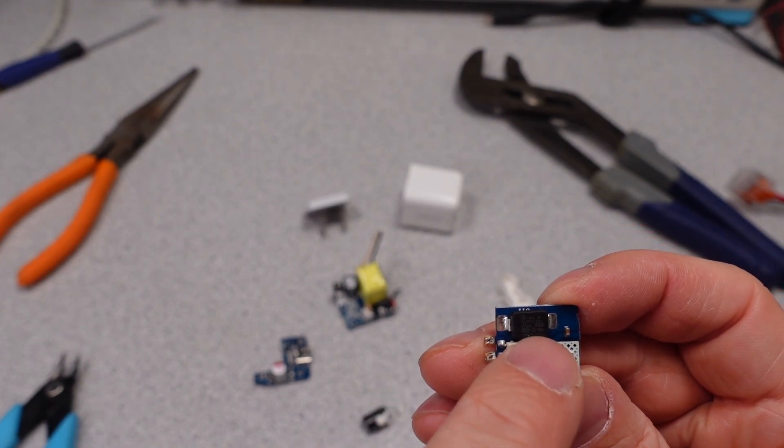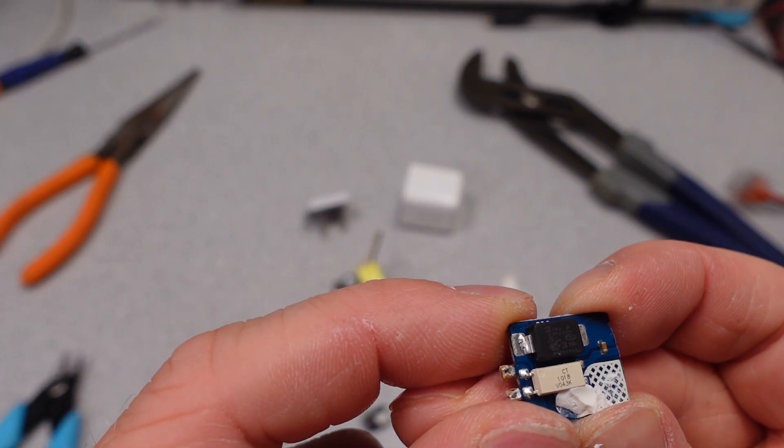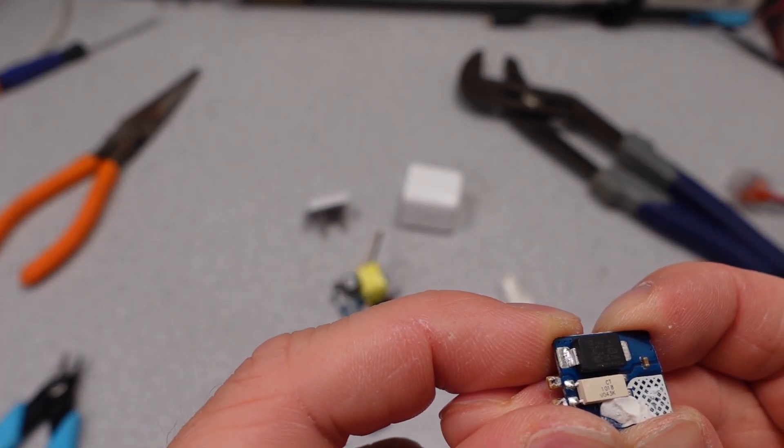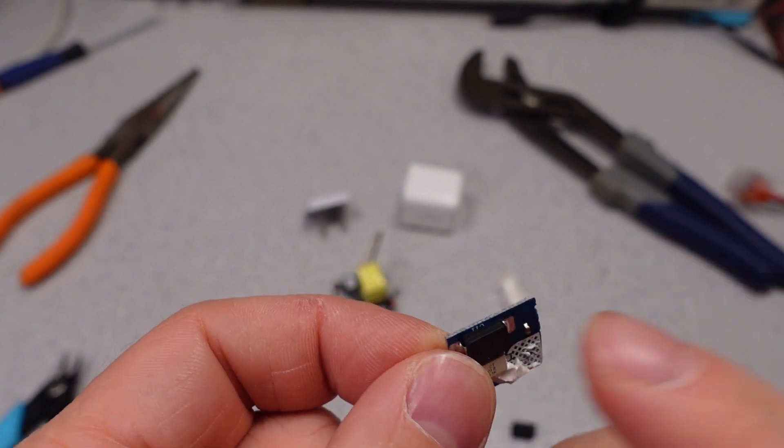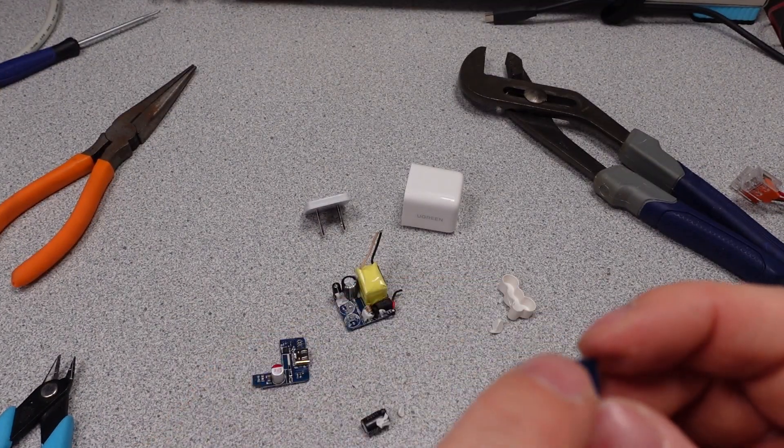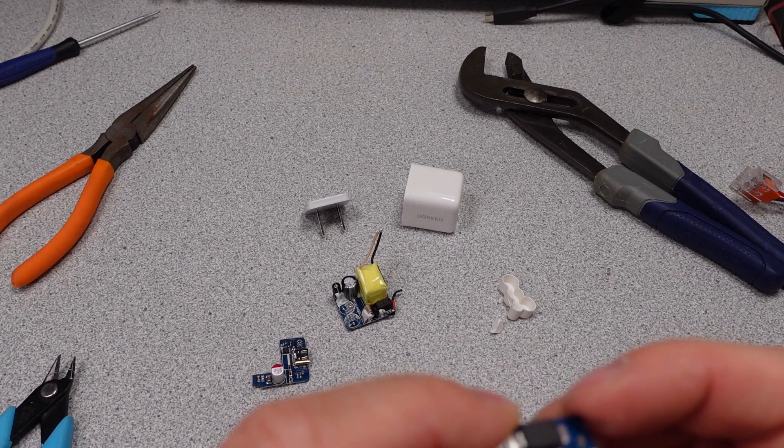And here we have our optocoupler, which we already were looking at. And then on this other side over here, this is actually our suppression capacitor. It's just in a really unique package. It's really hard to read the writing. That is actually a Y1 rated capacitor. So they didn't spare any expense there. It's actually pretty nice.